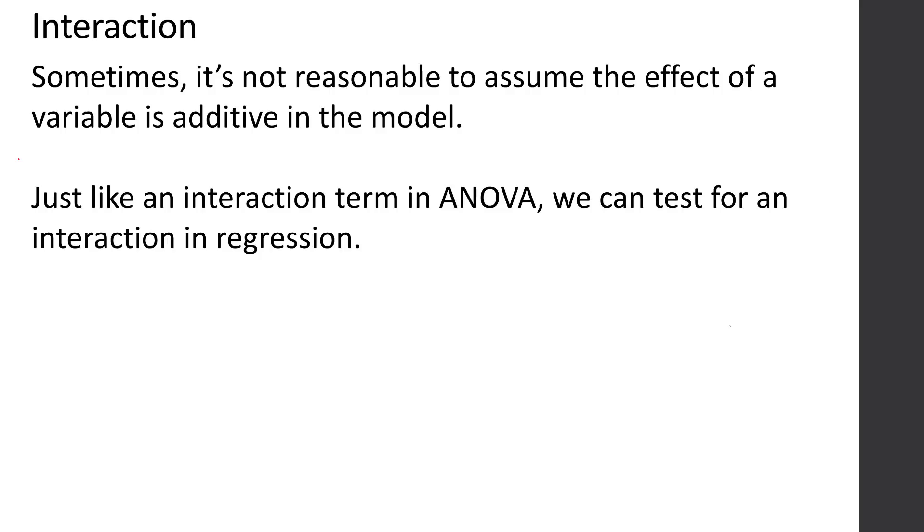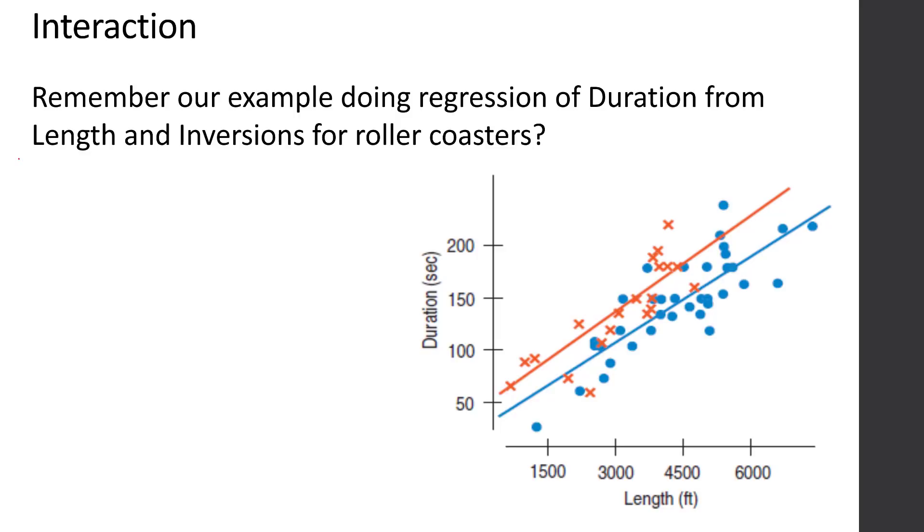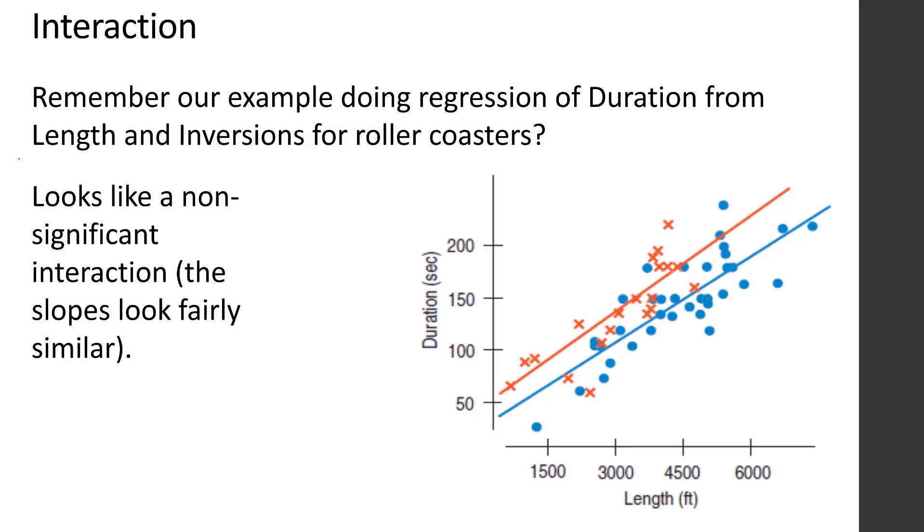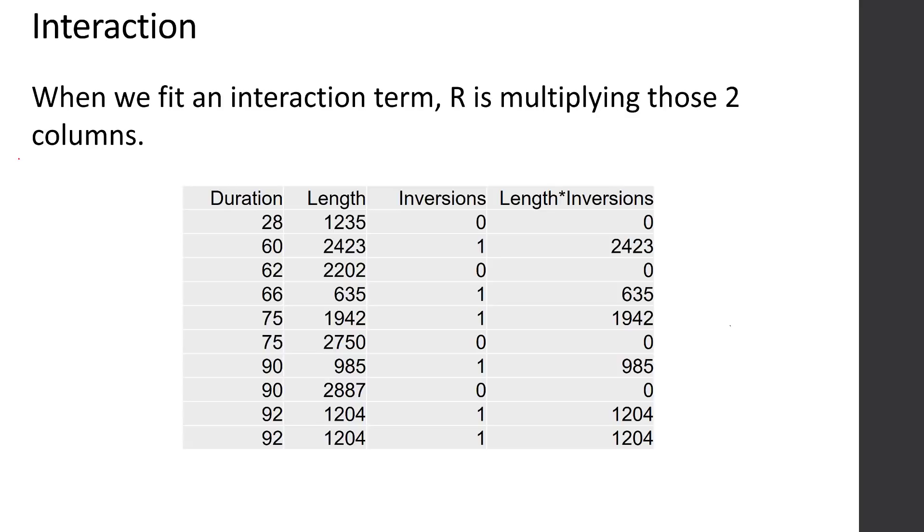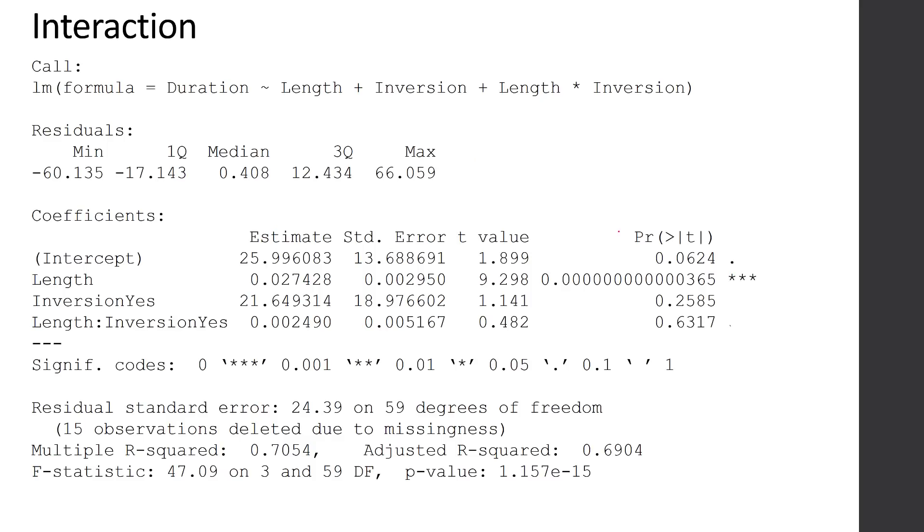Just like in ANOVA, we can have interactions between our variables. We can test for it just like we did in ANOVA. Remember our regression of duration from length and inversions for roller coasters? It looks like a non-significant interaction. The slopes look fairly similar, but we should test for it and check the p-value. When we fit an interaction term in R, it's actually multiplying those two columns. If you were using Excel to do statistics, you would have to create that column where you multiplied each length times what's in the inversion column. That's what R is doing behind the scenes for you.